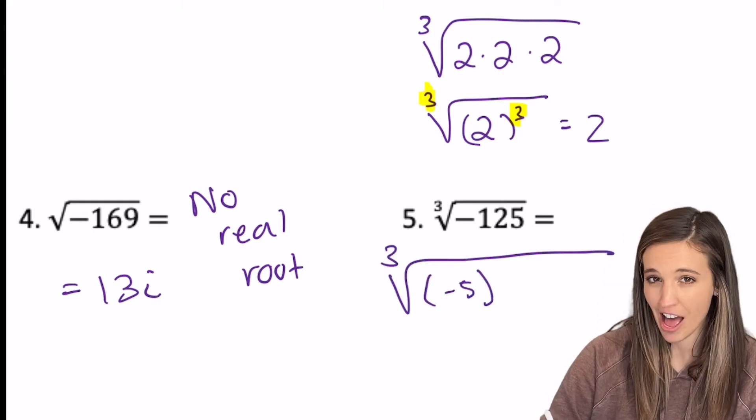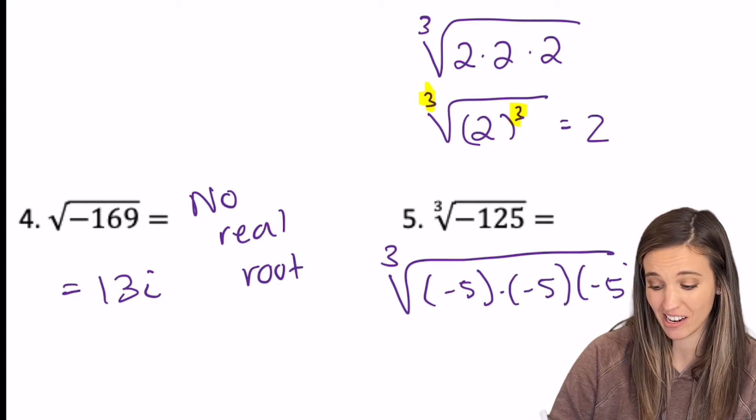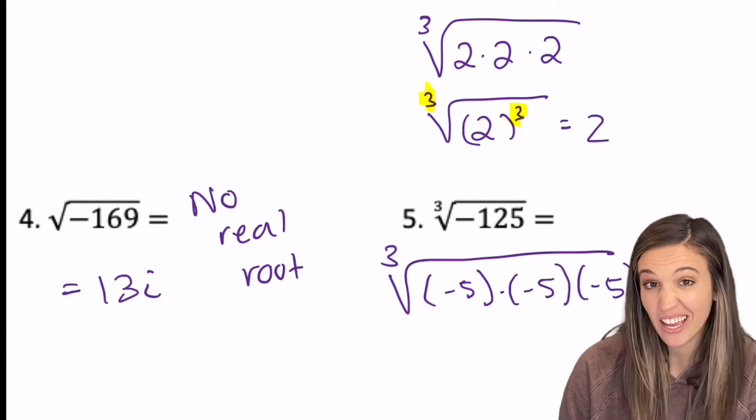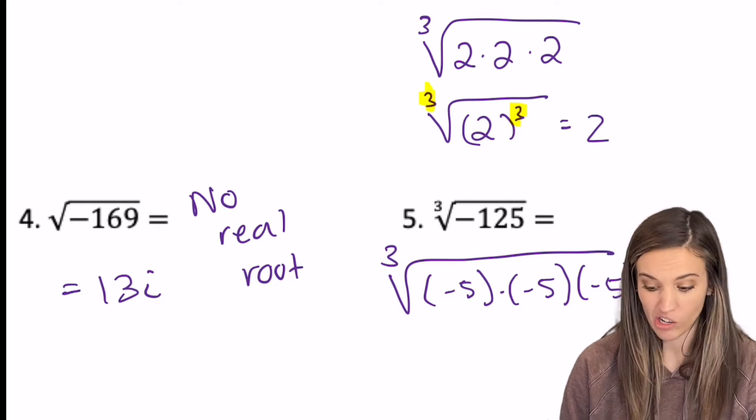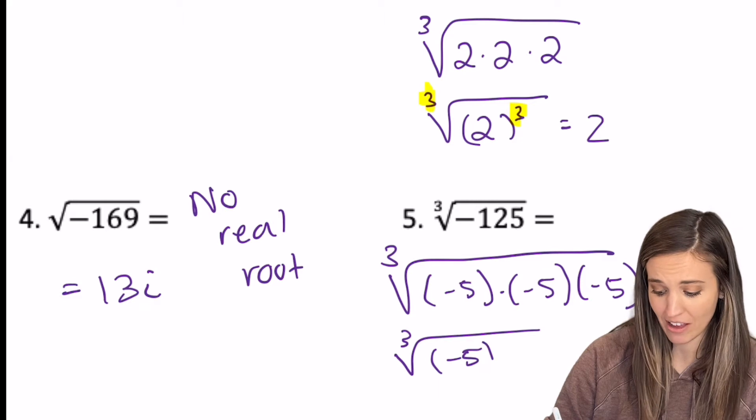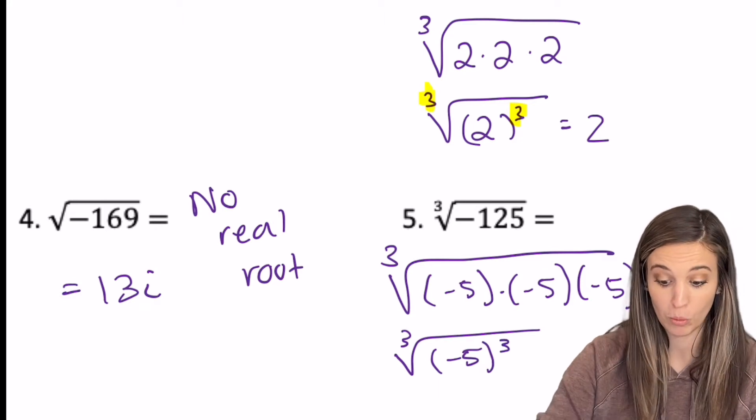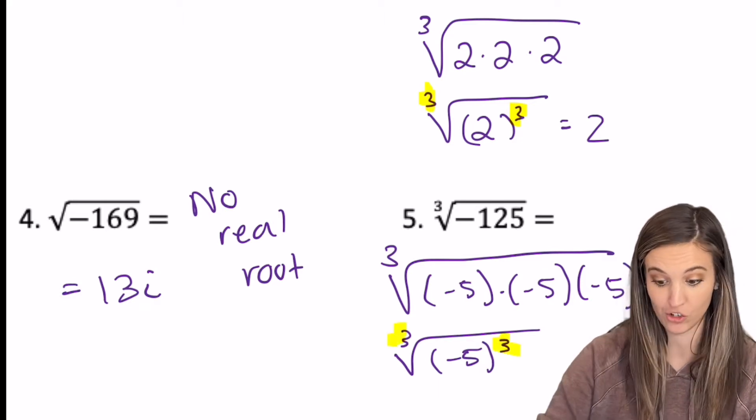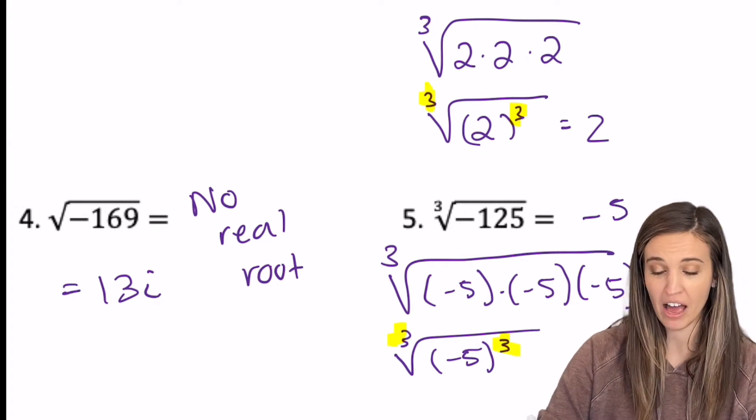Well, negative five times negative five times negative five is still negative 125. So I can rewrite this as the cube root of negative five cubed. Well, the cube root of something cubed is just that number. So negative five.